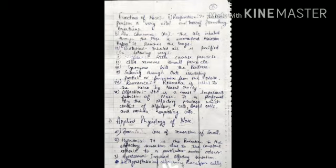Next are the functions of the nose. The nose performs five various functions. The first is respiration — as discussed earlier, it is the initial part of the respiratory tract and it performs the very important function of permitting breathing. The second function is air conditioning: the air which we inhale through the nose is warmed and moistened.